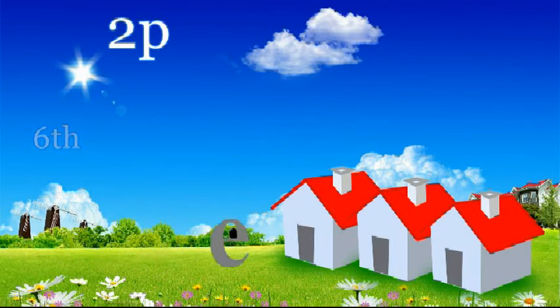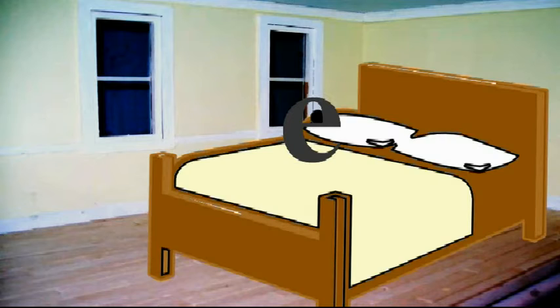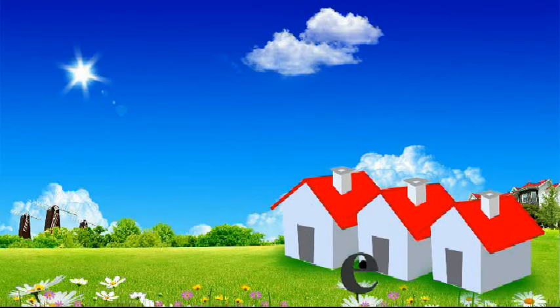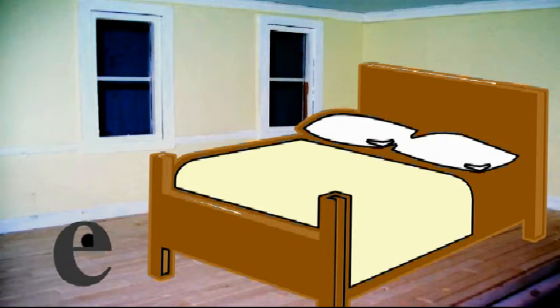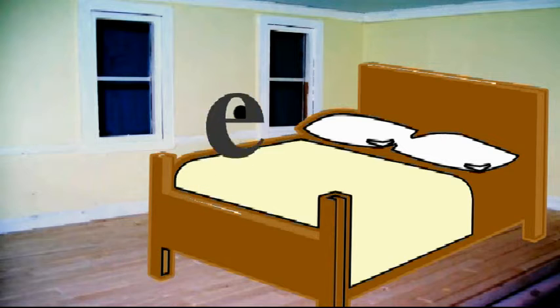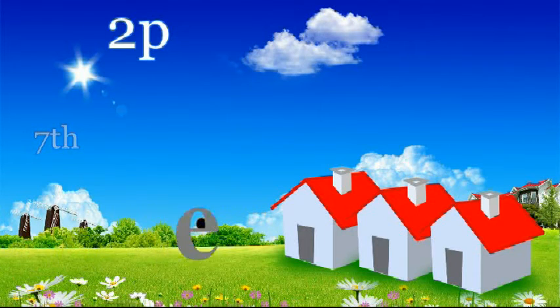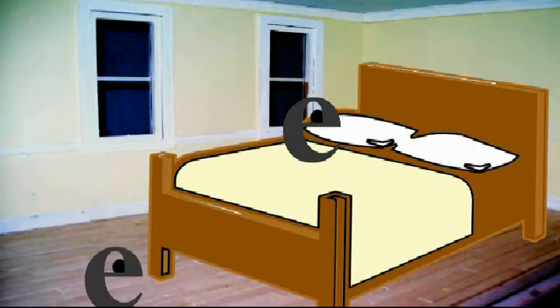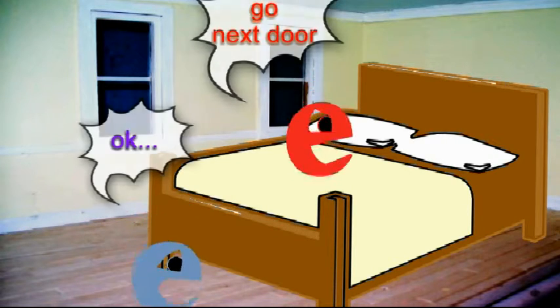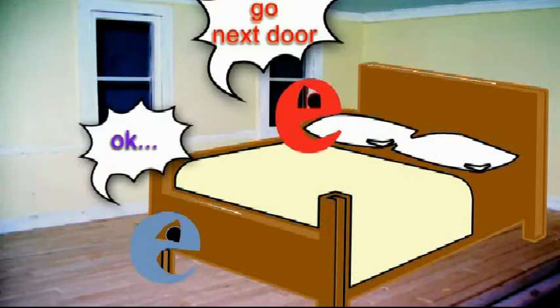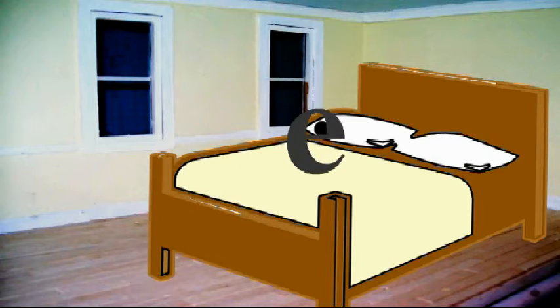Now the sixth electron comes. It goes to the first room of 2p but as someone is already there, it has to go to the next room. The sixth electron moves to the next vacant room and takes the second room — this is carbon. The seventh electron comes, the first room is full, the second room is also full, so it settles in the last room — this is nitrogen.